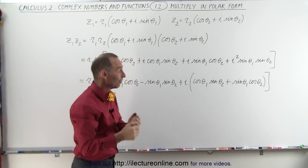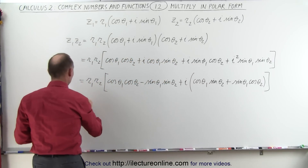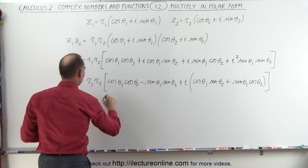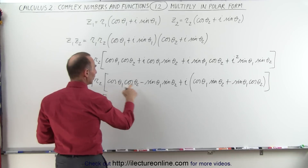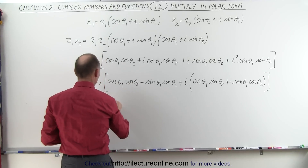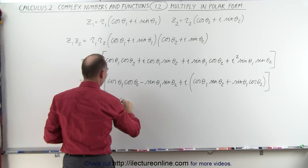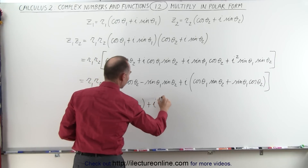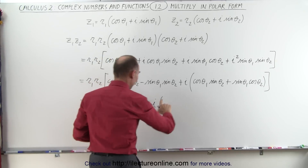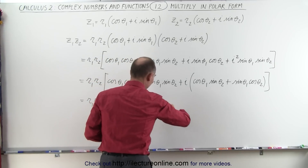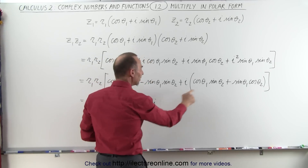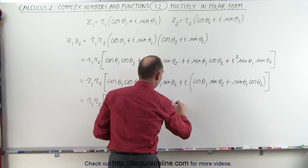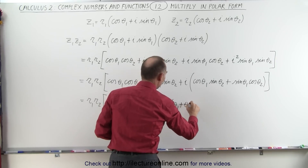So we can simplify that, and it looks as follows. This is equal to r1 times r2 times the cosine of theta1 plus theta2, plus i times the sine of theta1 plus theta2.